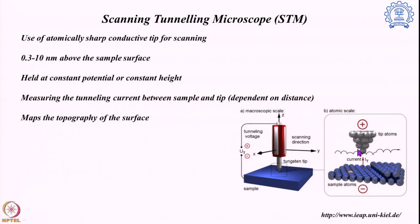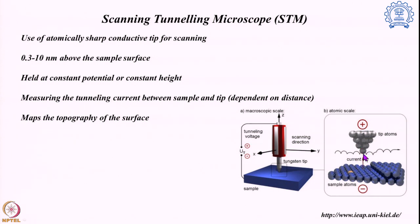This tip is held very close to the sample surface, maintaining a small distance of generally 0.3 to 10 nanometers. Within this gap, if the potential is correct, electrons can exchange between the tip and the sample surface — electrons passing through space. This is known as the tunneling current, and it is dependent on the distance between the surface and the tip, with an exponential dependence on distance. The amount of current measured gives a direct picture of the distance, and by scanning in the x, y, or z direction we can find out the topography of the overall sample surface.